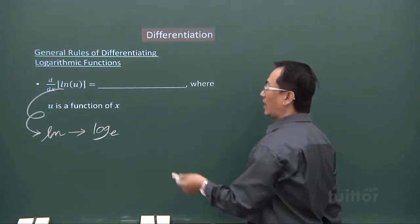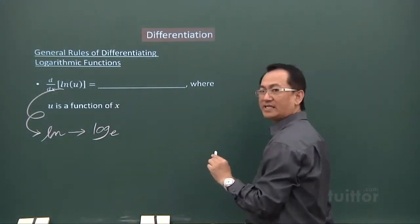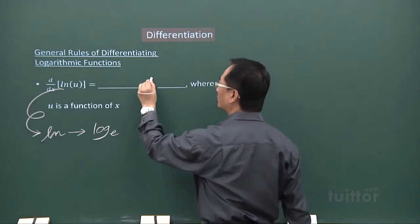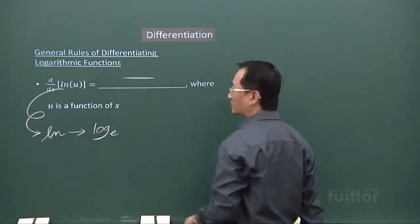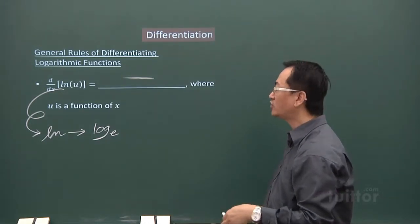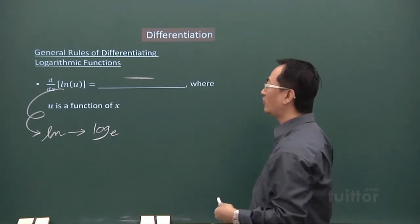So when you encounter differentiation of ln bracket u, first thing you do, draw a line across, you're anticipating a fraction, an algebraic fraction for answer.